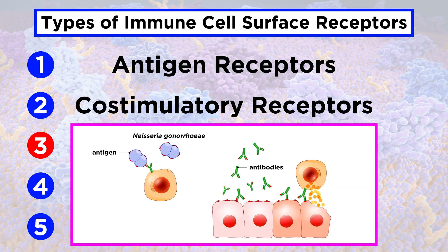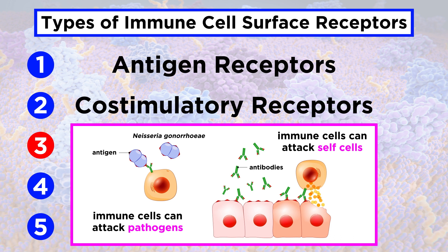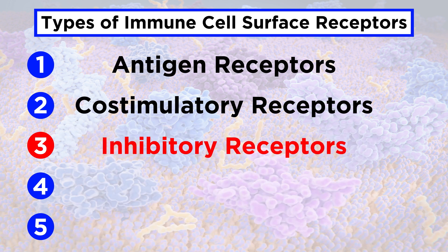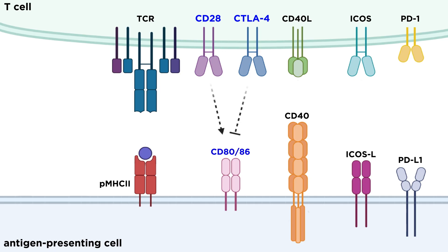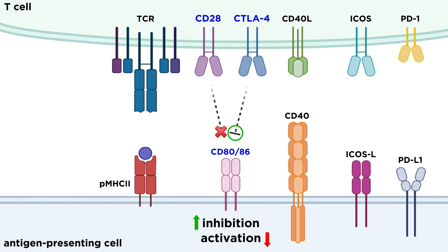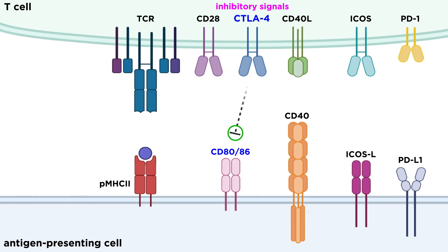Now on to the third type. Activated immune cells are capable of causing a lot of damage to both pathogens and self-tissues, so it's important to keep these responses well regulated. One way to keep activated immune cells in check is through inhibitory receptors. One example is CTLA-4 (cytotoxic T-lymphocyte-associated protein 4) on T cells. Like CD28, CTLA-4 also binds to CD80 or CD86 on antigen-presenting cells, but with higher affinity. CTLA-4 competes with CD28 for binding, meaning less CD28 can stimulate activation, thus preventing activation when in low enough concentration. Additionally, when CTLA-4 is bound, it sends inhibitory signals to the T cell.